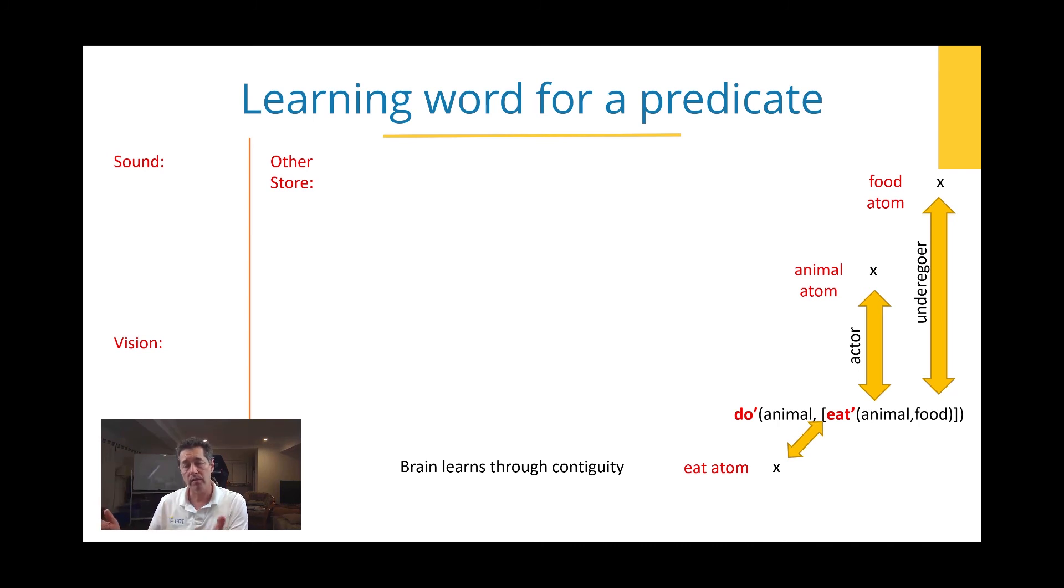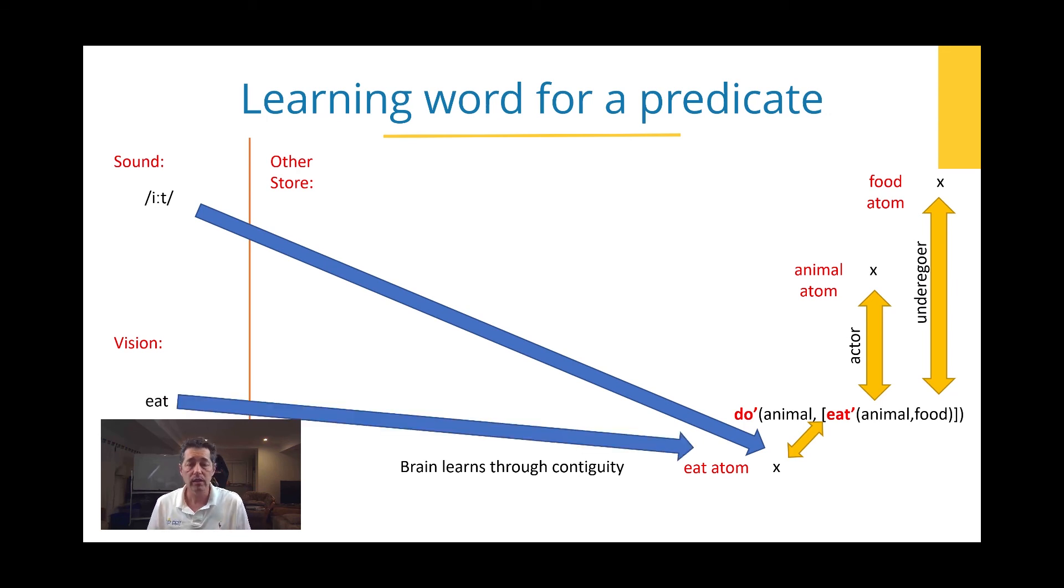So again, we're just introducing the concept. So predicate here has an actor, which is the thing doing the eating, and an undergoer, which is food, the thing being eaten. And we've, through a different mechanism, associated the meaning for that. And now what we want to do is learn the sound. So we hear eat, bang, bidirectional link. We now have the eat atom connected to that. And obviously, if the brain is automatically recognizing eat, you've got that active in the brain and you've got the active sound. And that's why you can learn these things without any type of complex processing engine. Similarly, vision, EAT, we just, again, do a bidirectional link.